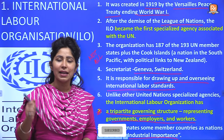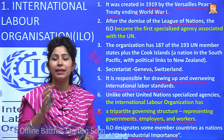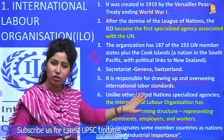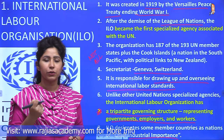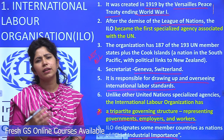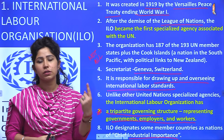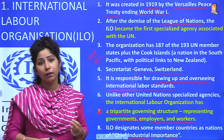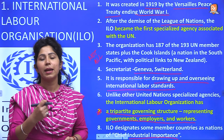What does ILO do? As the name indicates, it is responsible for drawing up and overseeing international labour standards. Unlike other United Nations agencies, which have either governments or NGOs as members, ILO is the only organization with a tripartite structure — meaning three types of members: first, governments; second, workers who represent labour; and third, employers. So it is a tripartite governing structure of ILO representing governments, workers, and employers. United Nations has 193 members while ILO has only 187 members.